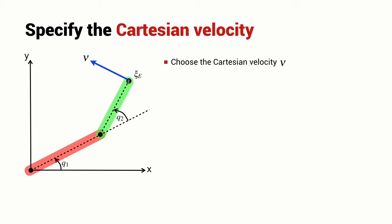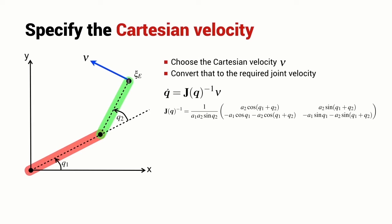We're going to specify the Cartesian velocity that we want the end effector to follow, and we want to convert that to the required joint velocity. We take the desired velocity nu, multiply it by the inverse Jacobian, and we get the joint velocity that we need. We can compute this inverse Jacobian and write it out symbolically.